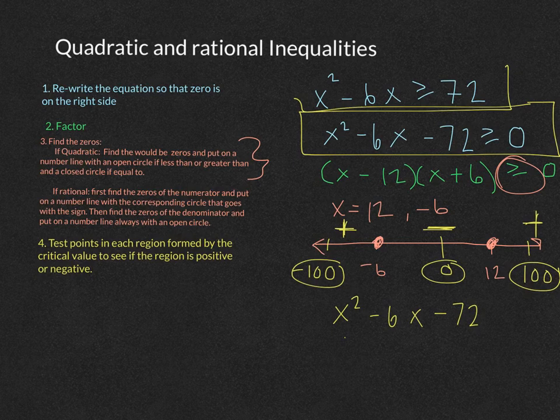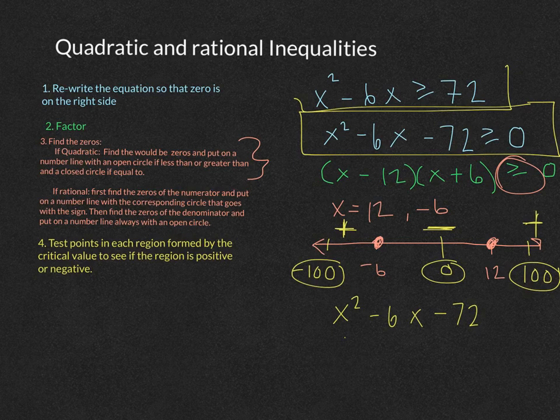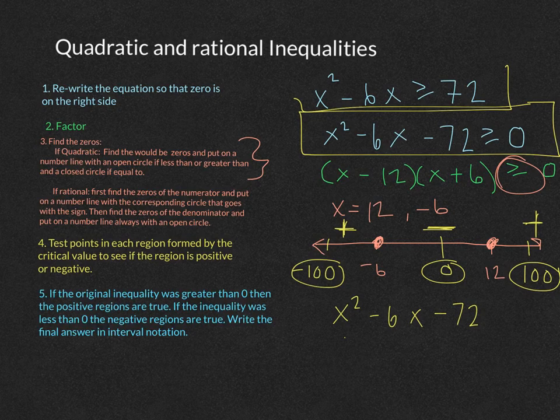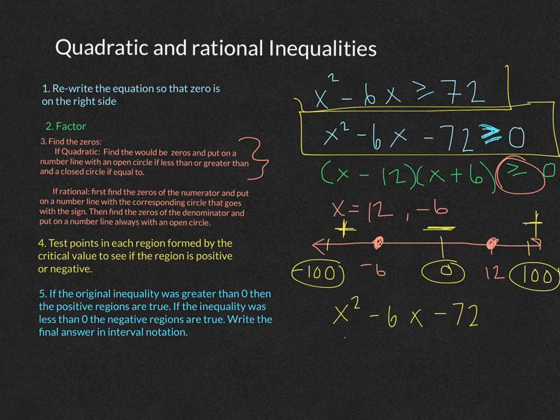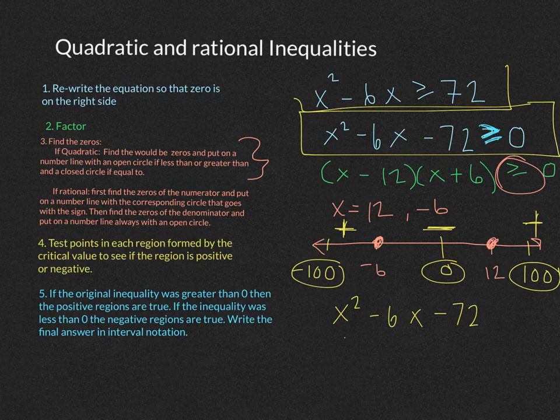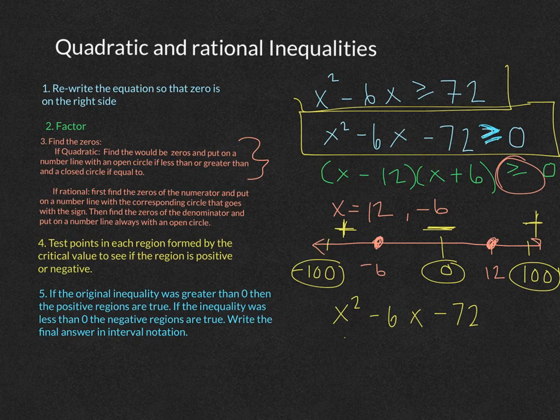So now that we've got what each region is, we're looking if the region is a positive region or a negative region, then we can move on to step 5. The last step here is to look at our original equation once we have it solved for. And we have my equation is greater than or equal to 0. So if the original inequality has greater than 0, that means all the regions that are positive are regions that are true.